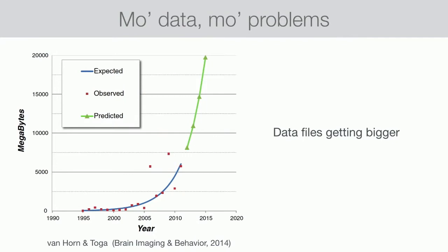What we're faced with in our field is a problem of size and complexity — our data sets are getting bigger and the questions we're asking are getting more complex. This is a review from Van Horn and Toga, now five years old, but shockingly accurate in their predictions. It shows just the raw size of individual data files coming off of the MRI scanner.